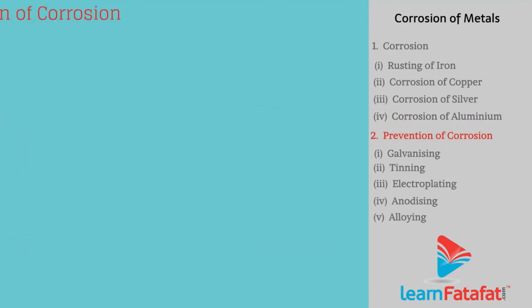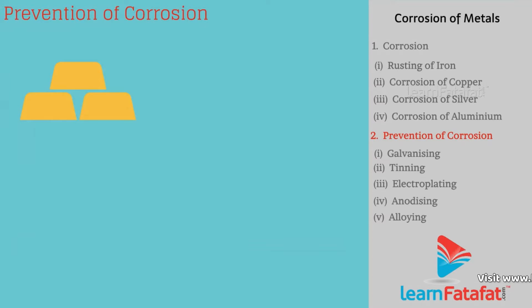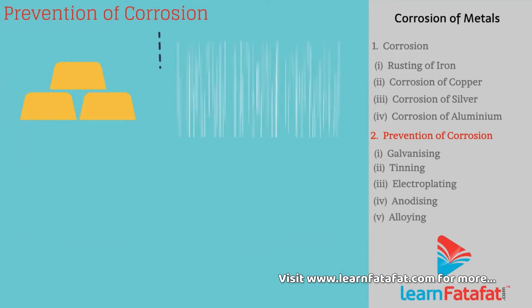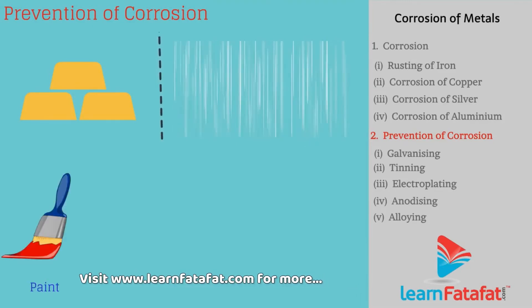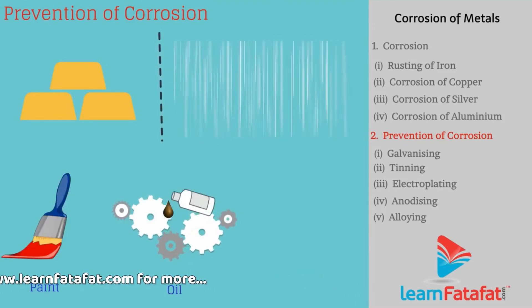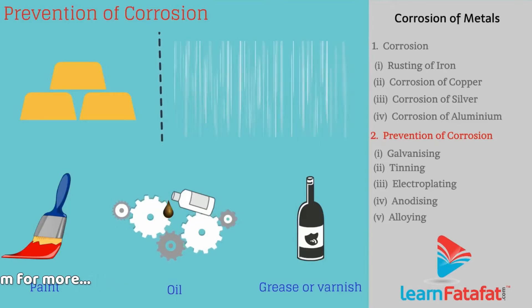Prevention of Corrosion: Corrosion can be prevented if the contact between metal and air is cut off. For example, coating metals with paint, oil, grease, or varnish prevents corrosion temporarily.